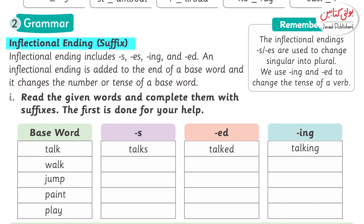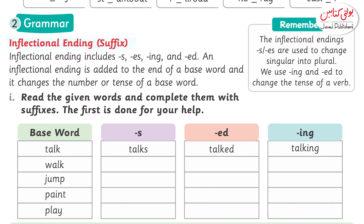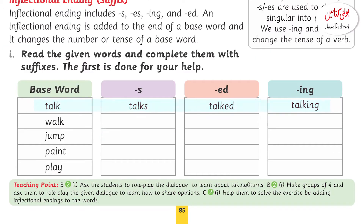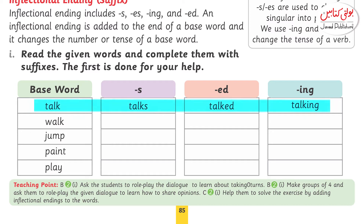Inflectional ending kya hoti hai? Kisi bhi word ke end mein agar s, es, ing, ya ed laga dein, to usse word ki jo form hai — jo past, present, ya koi bhi form hai — woh badal jati hai. Jis tarah ke base word hummare paas 'talk' hai. Is ke saath agar s, ed, ya ing laga dein, toh ye kya banega?